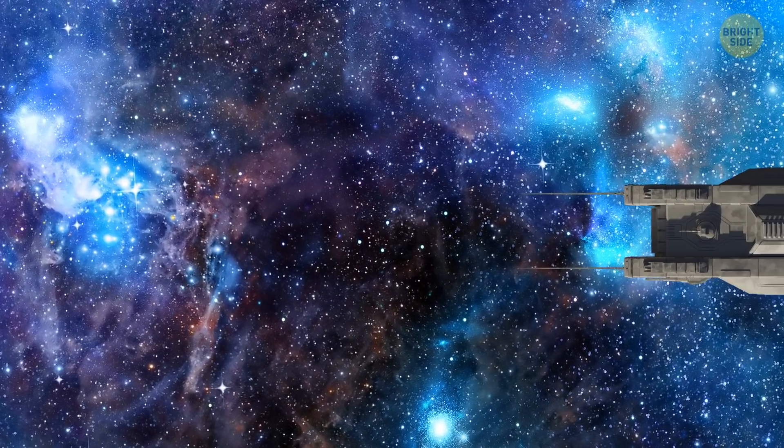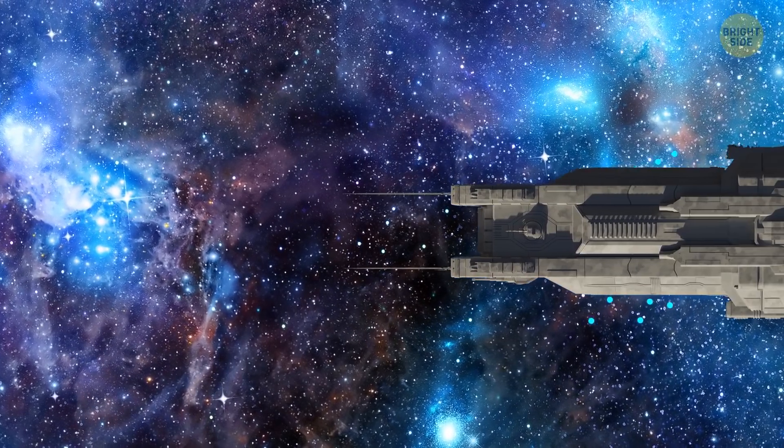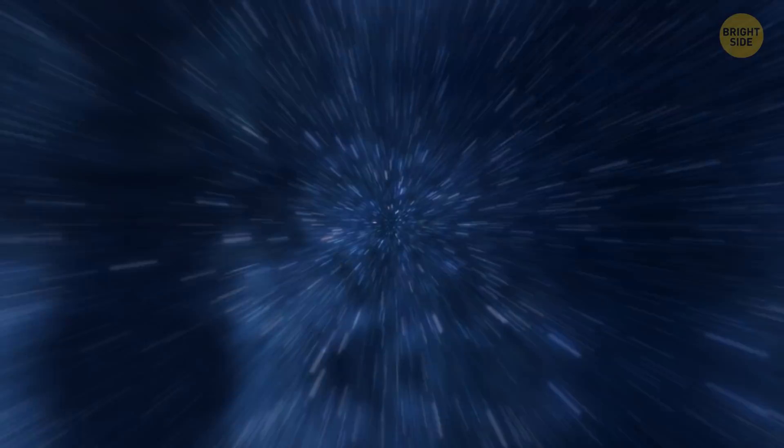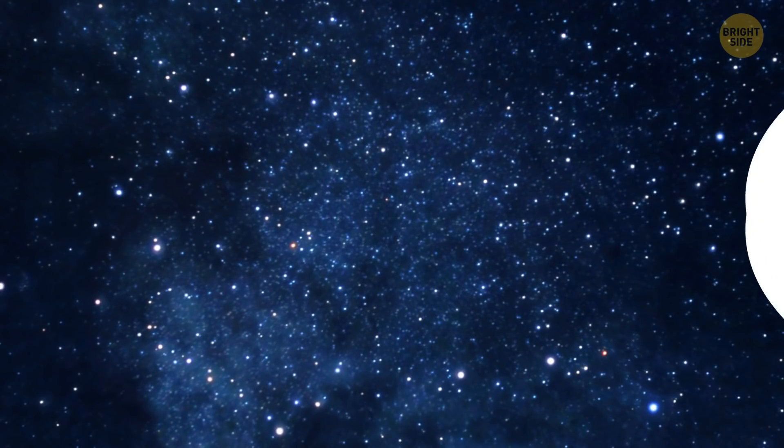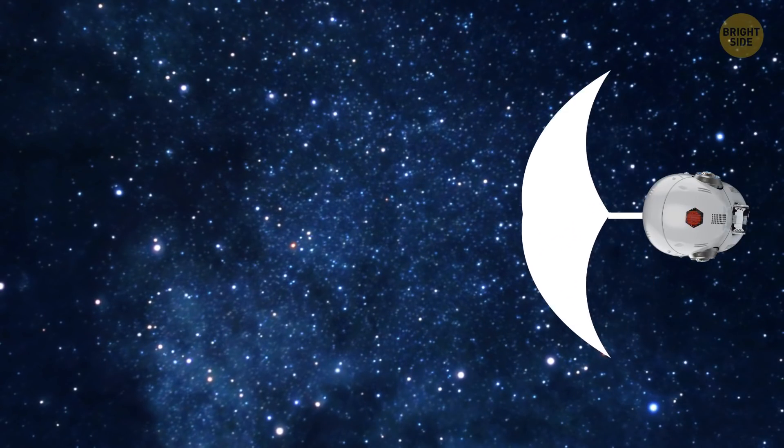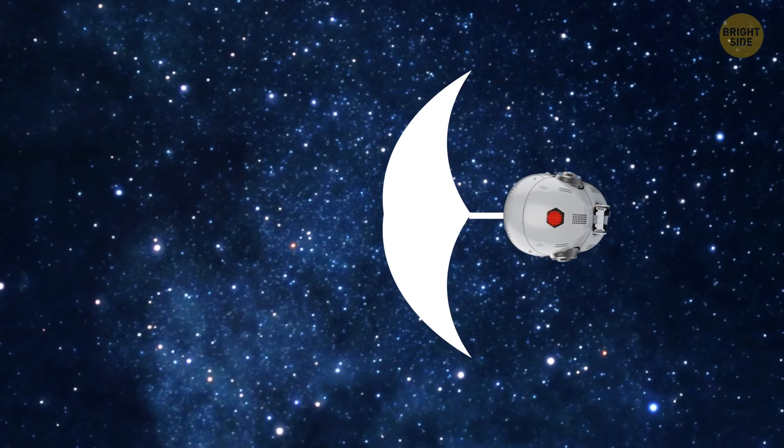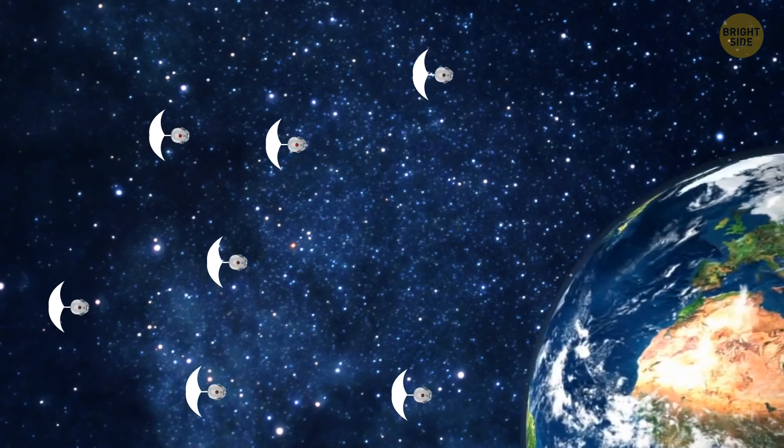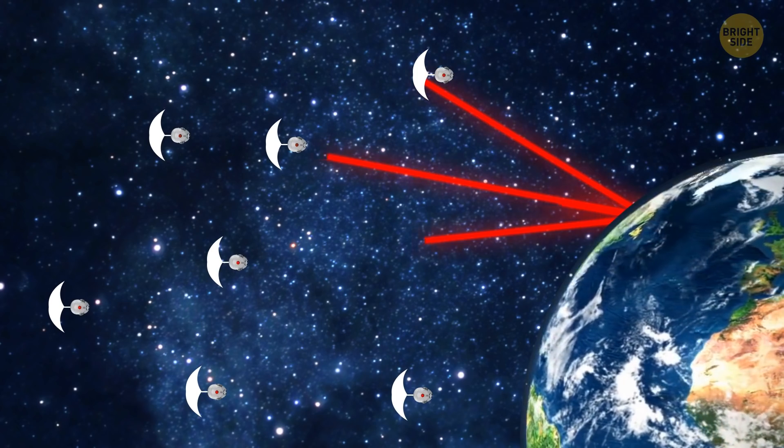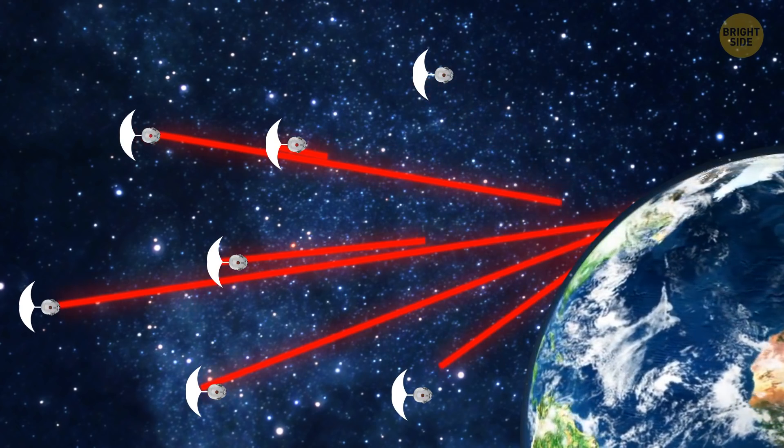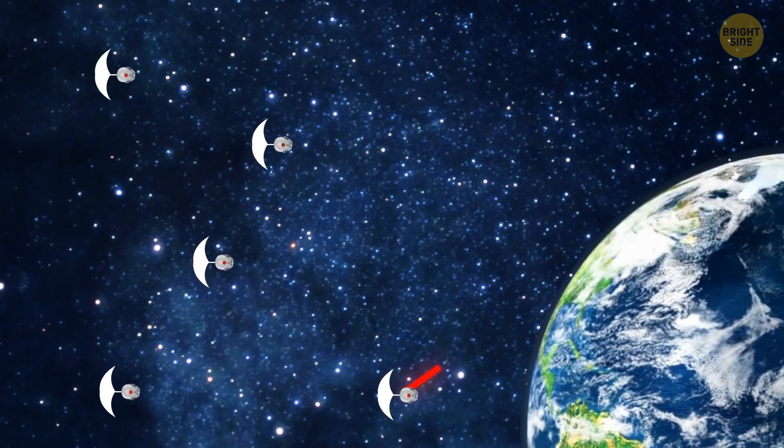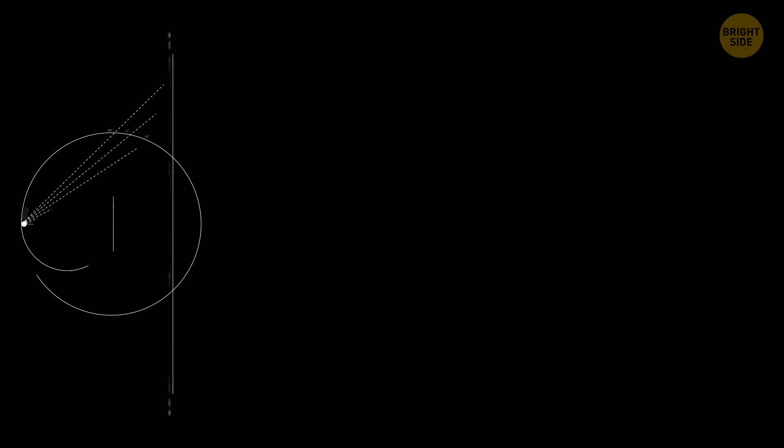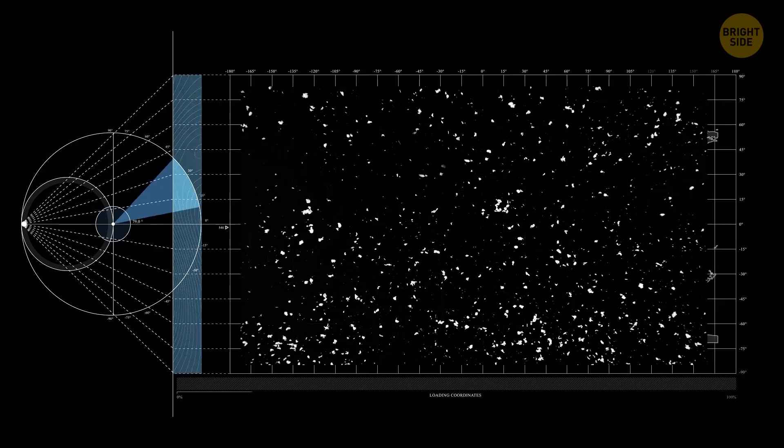After reaching orbit, the mothership will launch the probes into space. Each probe will then deploy a sail, a thin, reflective piece of material the size of a parking lot. Then, people will focus a powerful laser beam from Earth directly onto the probe's sails. This will give them an acceleration 1,000 times as strong as the acceleration of freefall on Earth. One by one, the probes will launch and head for their destination.